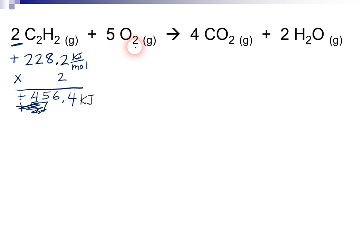Now, the value for oxygen gas, you might remember from our last problem, is zero kilojoules per mole. And the five here means we multiply that by five. Of course, it's still zero.